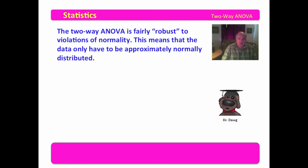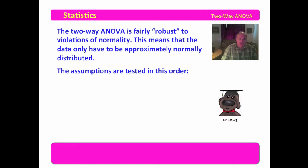The two-way ANOVA is considered to be fairly robust to violations of normality. Of course, this means that the data only have to be approximately normally distributed. The problem with that statement is: define 'approximately normally distributed.' I don't think anyone can give a clear definition of what that means — there are a whole lot of different interpretations.